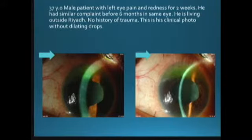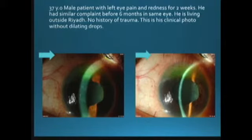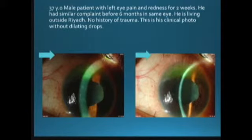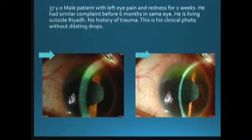Case example: a 37-year-old male patient with left eye pain and redness for two weeks. He had a similar complaint six months ago in the same eye. He is living outside Riyadh, no history of trauma. This is his clinical photo without dilation. What are the important things in the history stem? He's 37 — middle age, male. History of pain and redness, which is recurrent, and the complaint is in one eye — mostly dealing with unilateral disease.